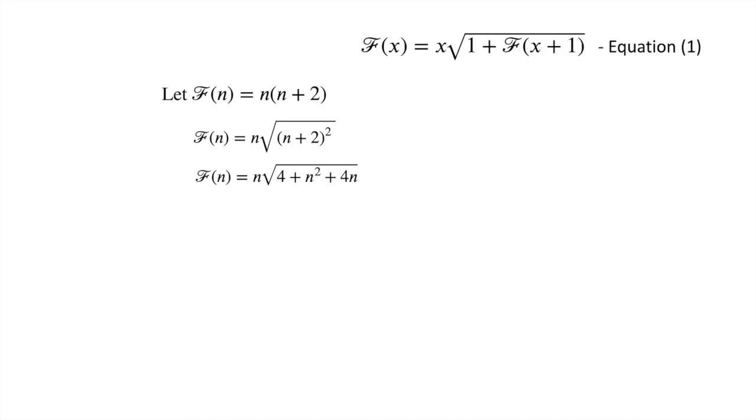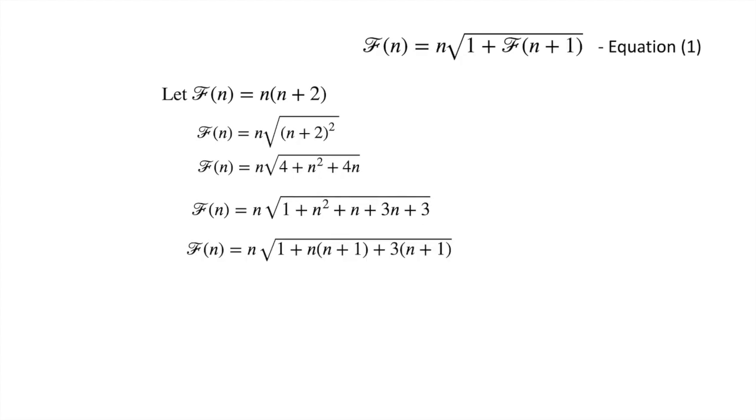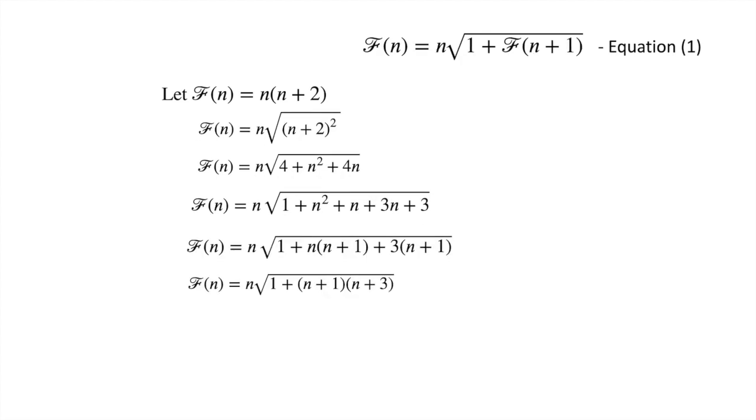And by rearrangement, we can write this expression as one plus n square plus n plus three n plus three, leaving aside one. And then by using factorization, we can simplify rest of the term to n plus one times n plus three.